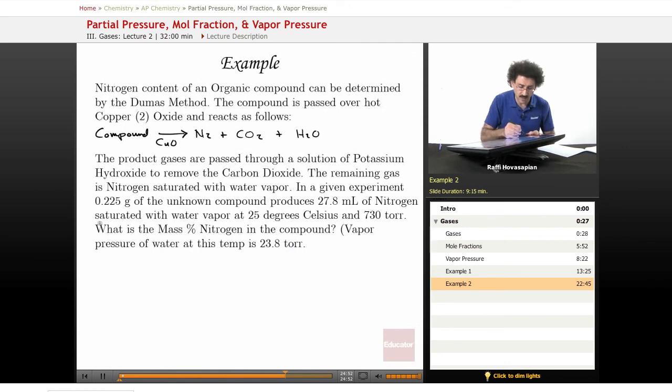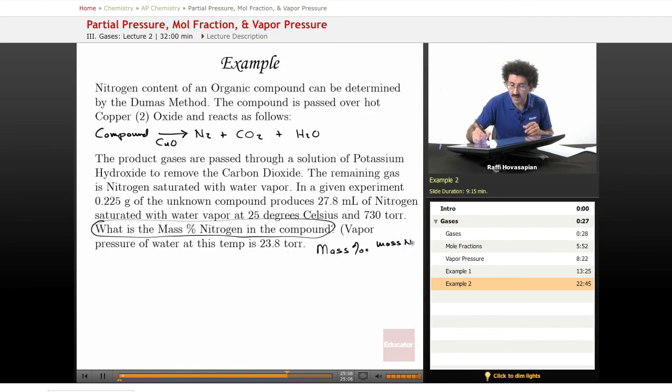What are they asking for? They want to know what is the mass percent of nitrogen in this compound. Well, we know mass percent, so let's just write out the equation. Mass percent equals the mass of nitrogen over the total mass times 100. We have the total mass already. Our compound is 0.225 grams. We already have one of the numbers. All we need to do is find the mass of nitrogen.